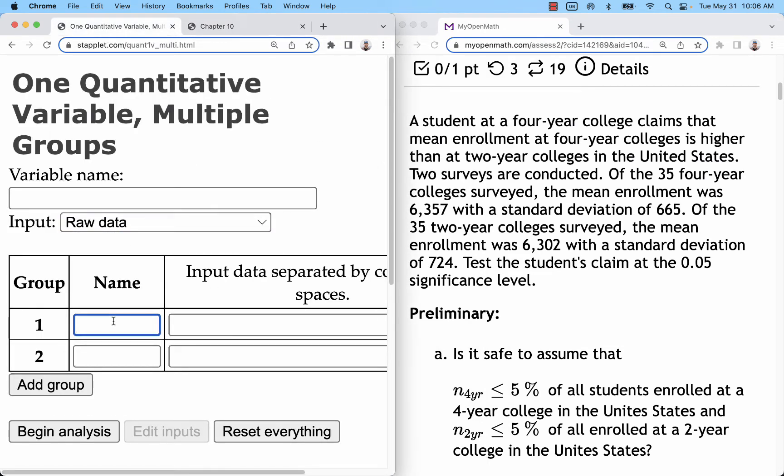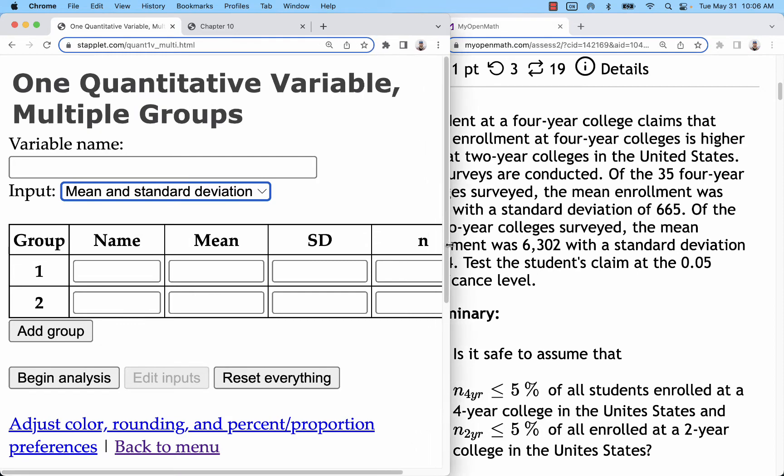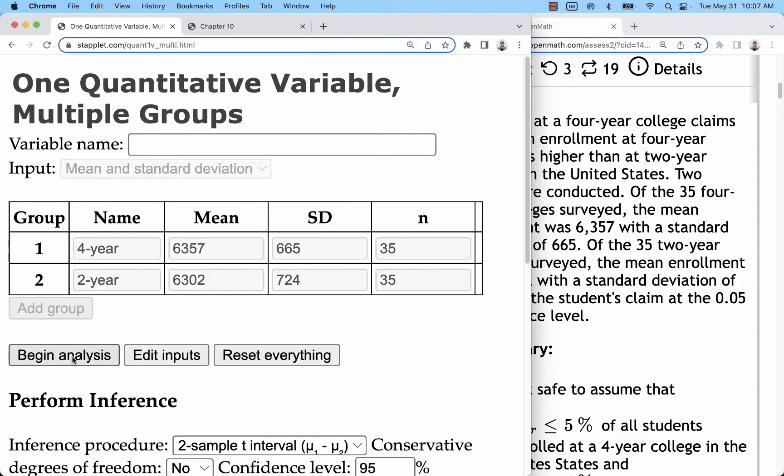So here I've got my two variables. I need to have mean and standard deviation for those. The first information that I get is four-year colleges. Second one's two-year. Starting with four-year, I've got 35 of them. That's my n. I've got a mean of 6,357 and a standard deviation of 665. For my two-year colleges, there's also 35 of those numbers with a mean of 6,302 and a standard deviation of 724. So that will be all my data in there just for those two groups. I can do begin analysis here.